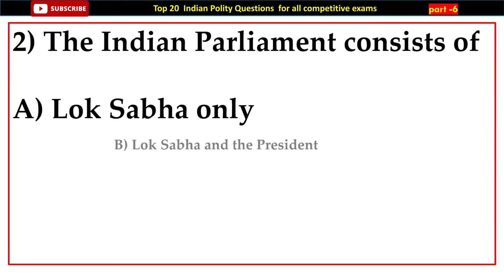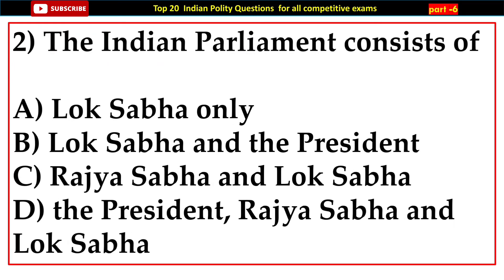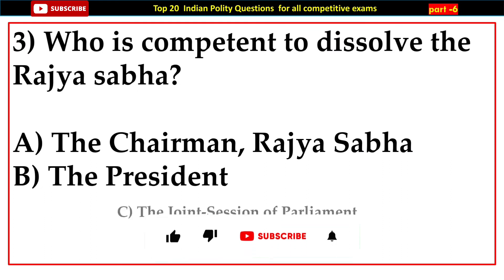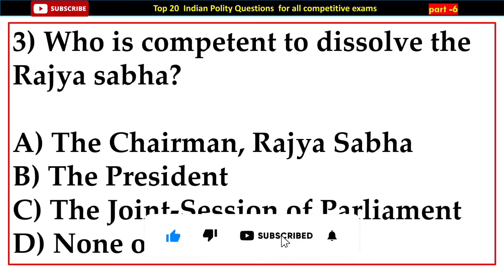Question number two: The Indian parliament consists of — options: A) Lok Sabha only, B) Lok Sabha and the President, C) Rajya Sabha and Lok Sabha, D) The President, Rajya Sabha and Lok Sabha. Answer: D) The President, Rajya Sabha and Lok Sabha.